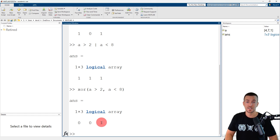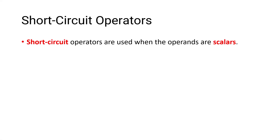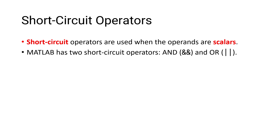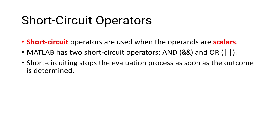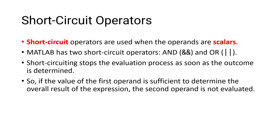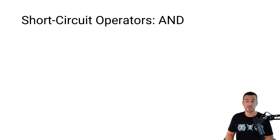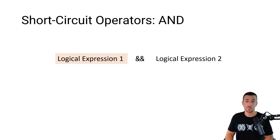Next, let's take a look at what happens when the operands are scalars instead of arrays. Short-circuit operators are used when the operands are scalars. MATLAB has two short-circuit operators: AND and OR. Short-circuiting stops the evaluation process as soon as the outcome is determined. So if the value of the first operand is sufficient to determine the overall result of the expression, the second operand is not evaluated. With the logical operator AND, MATLAB will only return logical 1 or true if both logical expressions are true. So if logical expression 1 is false, there is no need to evaluate logical expression 2.